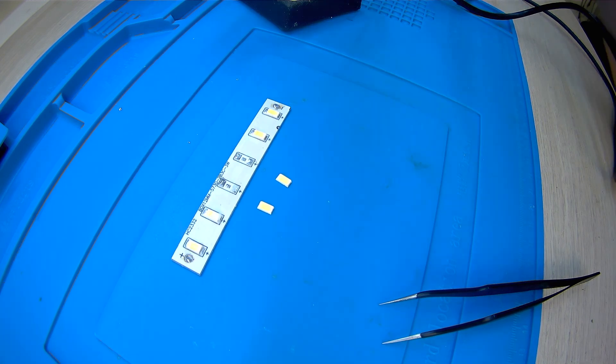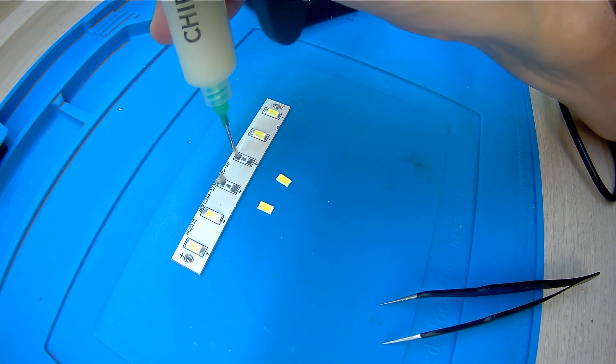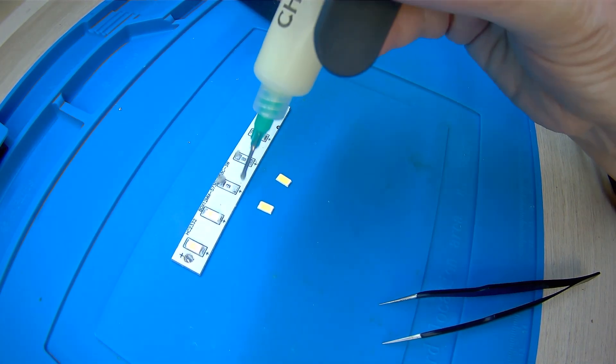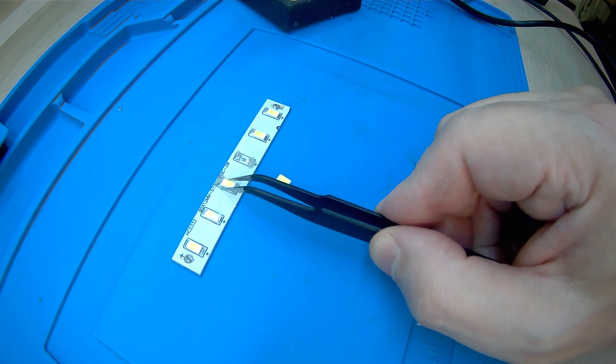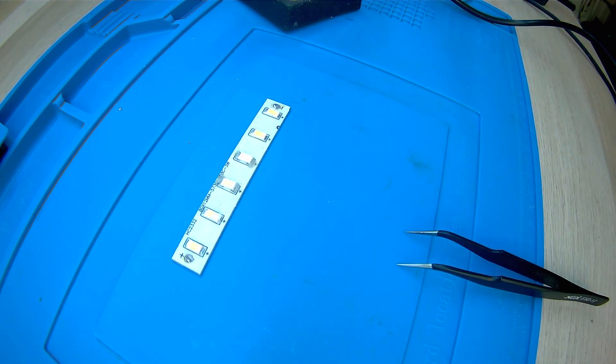We apply flux to the soldering area and take the LED and install it in place. Simple and fast, but you need to do it carefully.